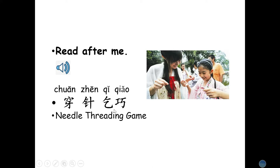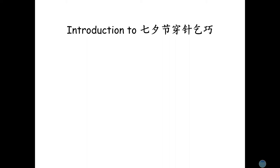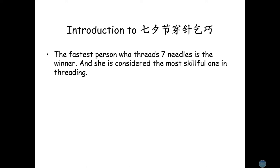Chuan zhen qi chiao. Chuan zhen qi chiao. Very good. The fastest person who threads seven needles is the winner, and she is considered the most skillful one in threading.